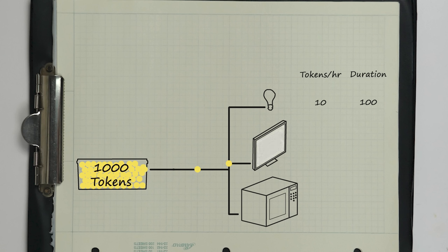The TV, on the other hand, uses 100 tokens per hour, so it would only run for 10 hours on those 1,000 tokens.